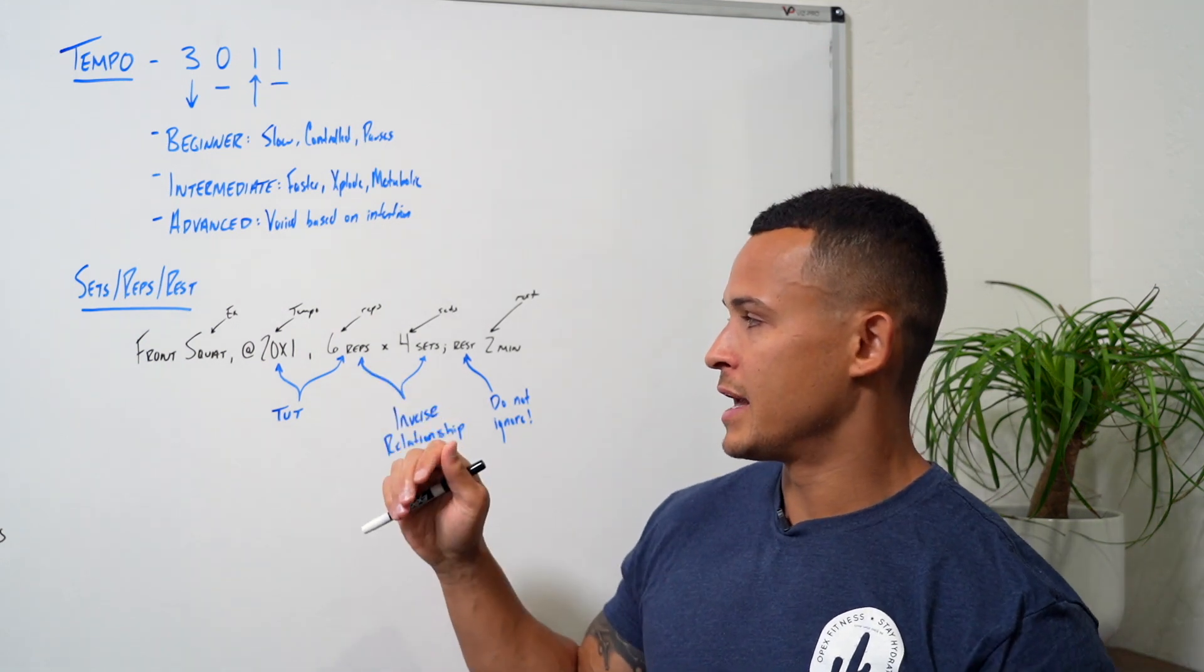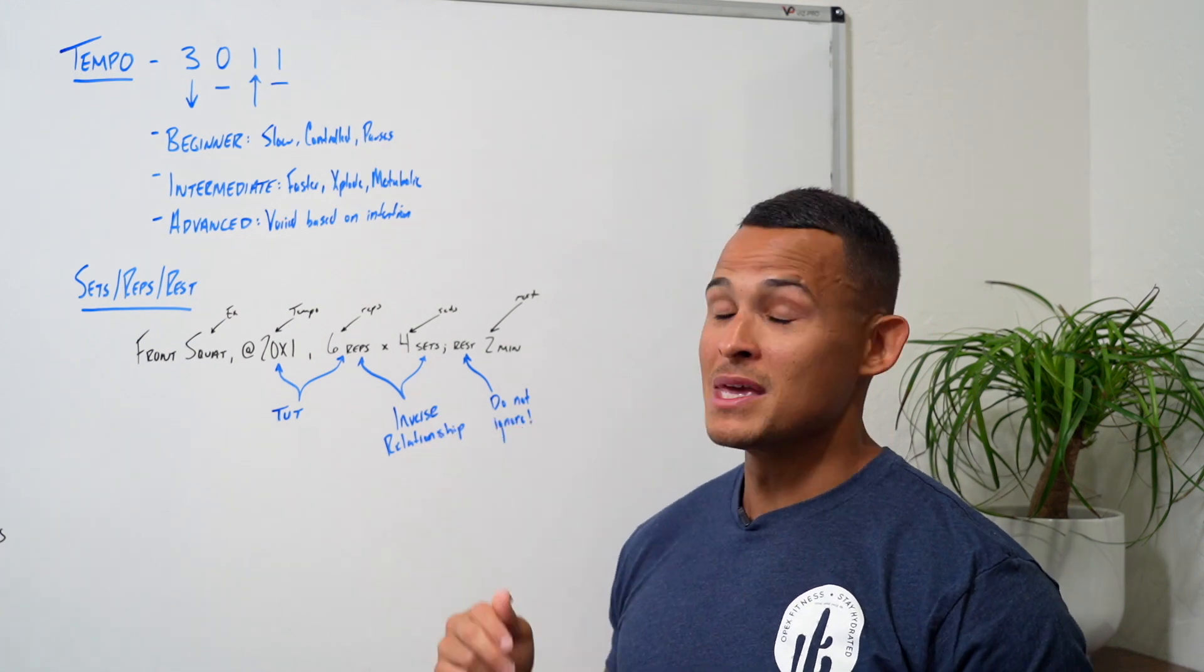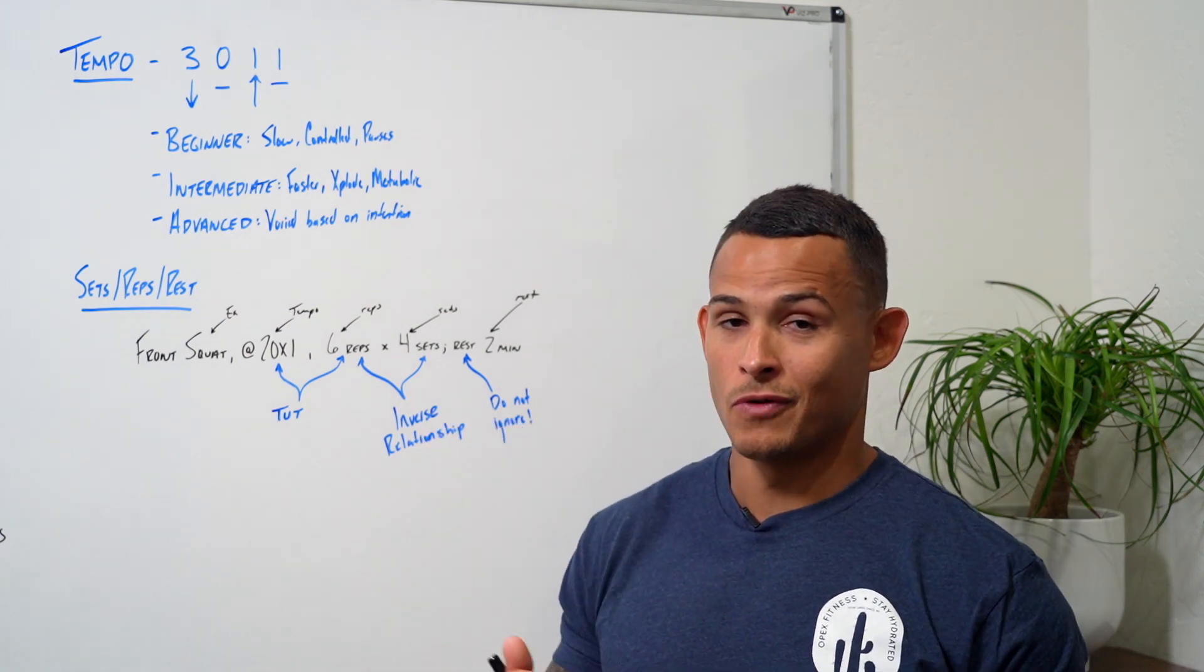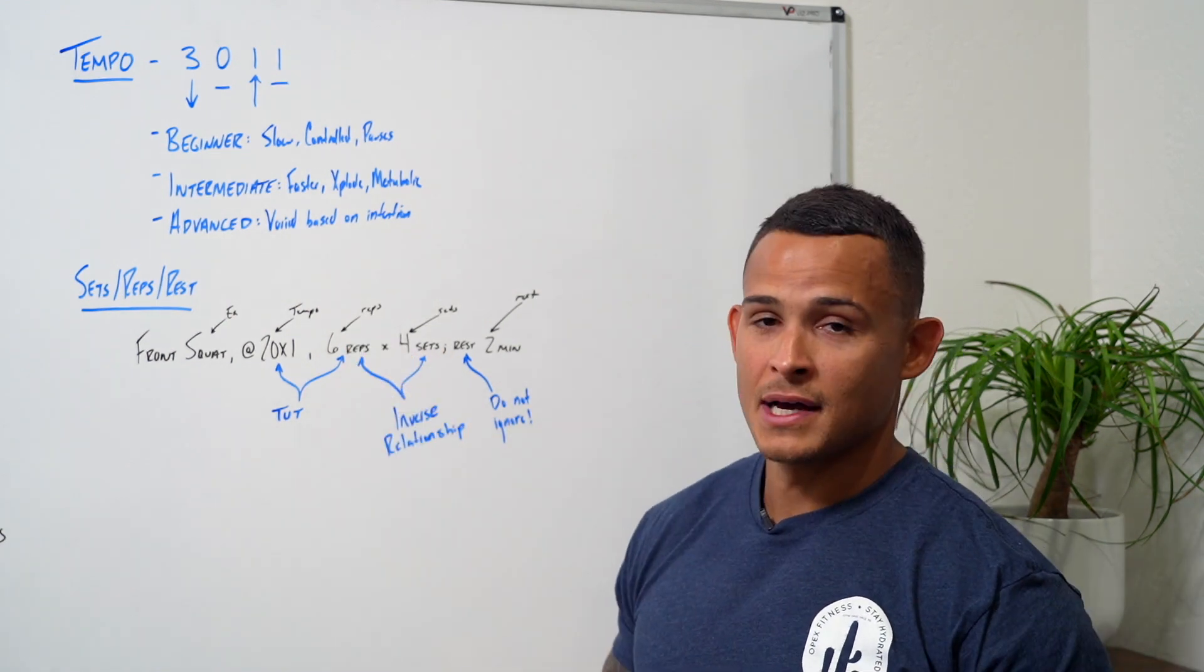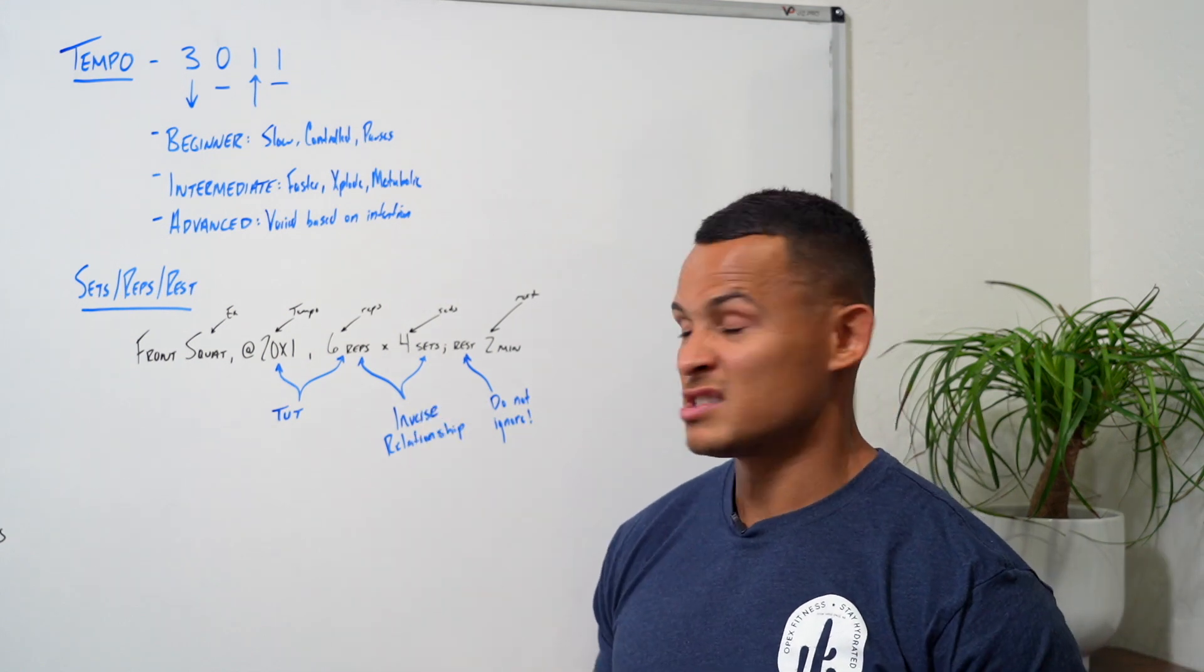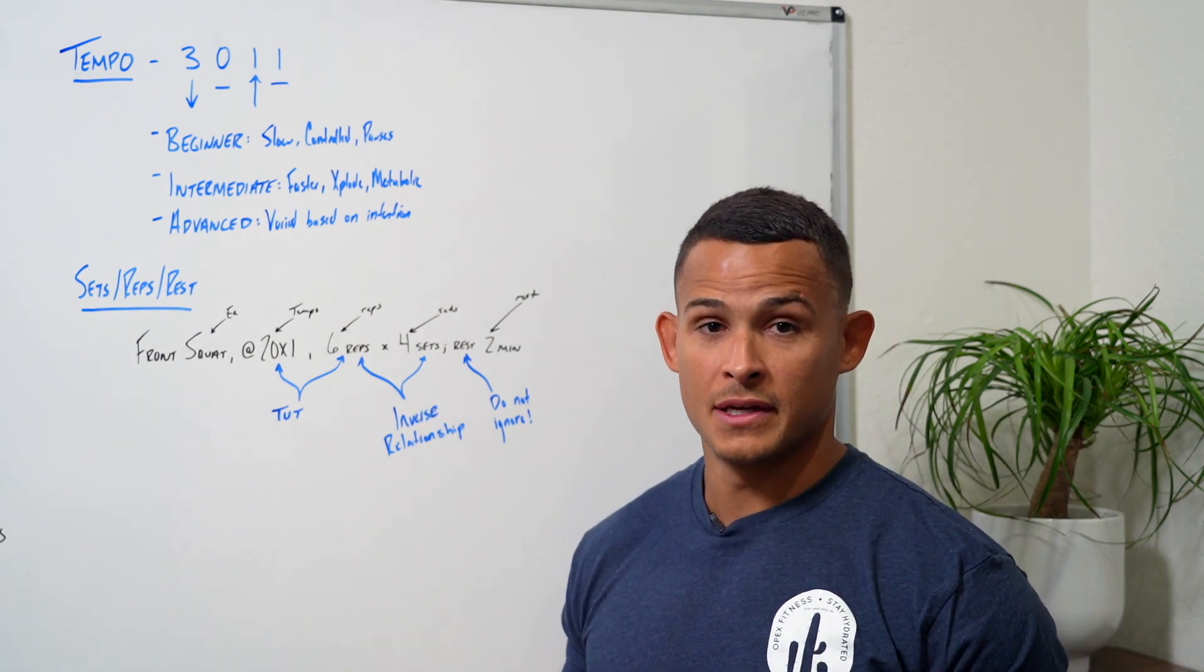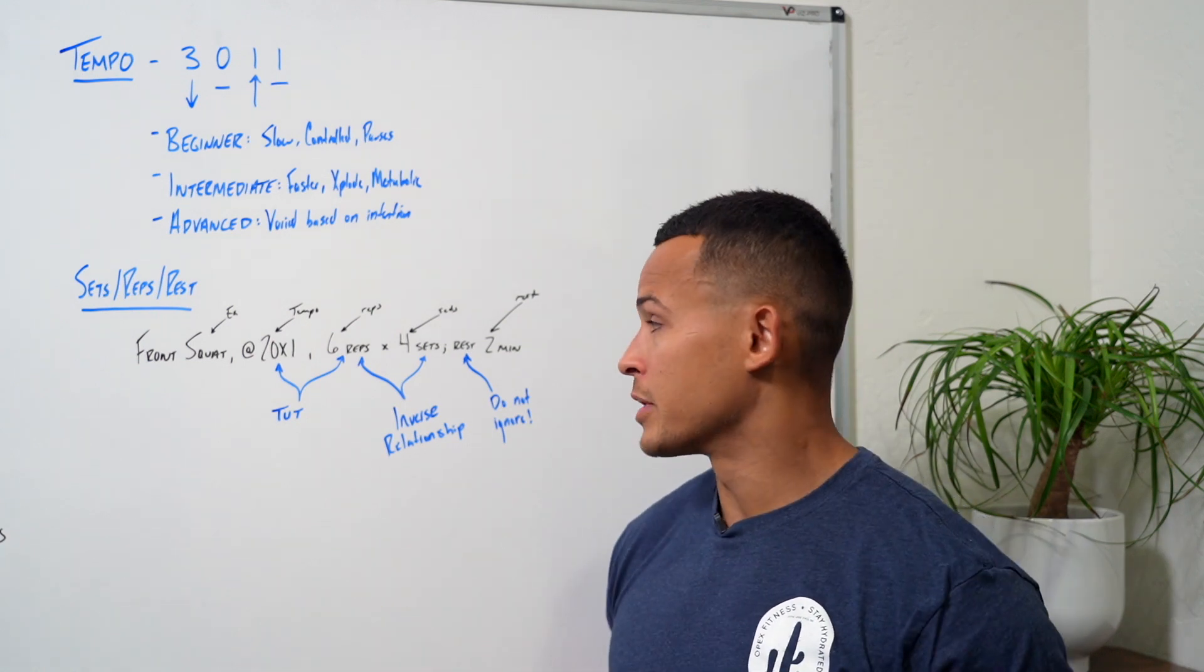If I have a medium amount of reps, I'm going to have a medium amount of sets. So typical five by five, right? If I have low reps, I'm typically going to have higher amounts of sets. So if I'm doing singles, I can do six, eight, ten sets of singles. You can kind of see how there's that inverse relationship between those two numbers.